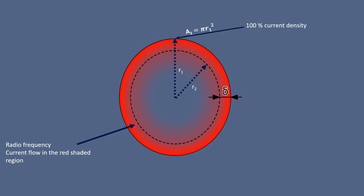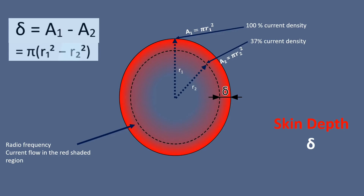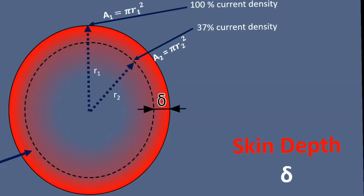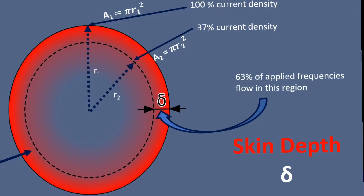The current density is 100% at the outer surface of the conductor, and it falls down toward the center of the conductor to 37% of its most dense zone for a certain frequency. The depth distance between those two zones, as marked by a1 and a2, is called the skin depth, which is symbolized as delta.